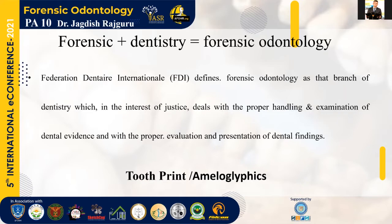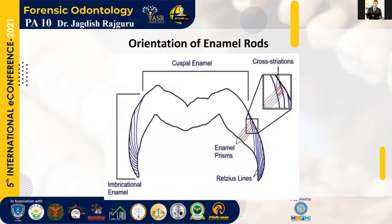Tooth print, or dentally and medically, is called as ameloglyphics. Ameloglyphics means 'amelo' refers to a part of the structure of the tooth, that is enamel, and 'glyphics' means carving. So we discuss the structure and orientation of enamel rods in various patterns and see the importance of tooth print. The physical properties of enamel state 96% inorganic component and 4% organic component by weight, and 92% inorganic and 8% organic by volume. It provides significant information.